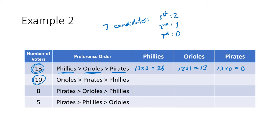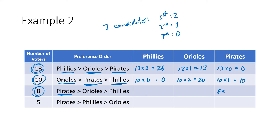Ten voters like the Orioles the best, so first place votes are worth two points — 10 times two is 20 points for the Orioles. Pirates are second, so that's 10 times one. Phillies are last, worth zero, so 10 times zero is zero. Eight voters like the Pirates the best — first place votes are worth two — so eight times two is 16. Orioles are ranked second, so eight times one is eight. Phillies are ranked last, worth zero, so eight times zero is zero.